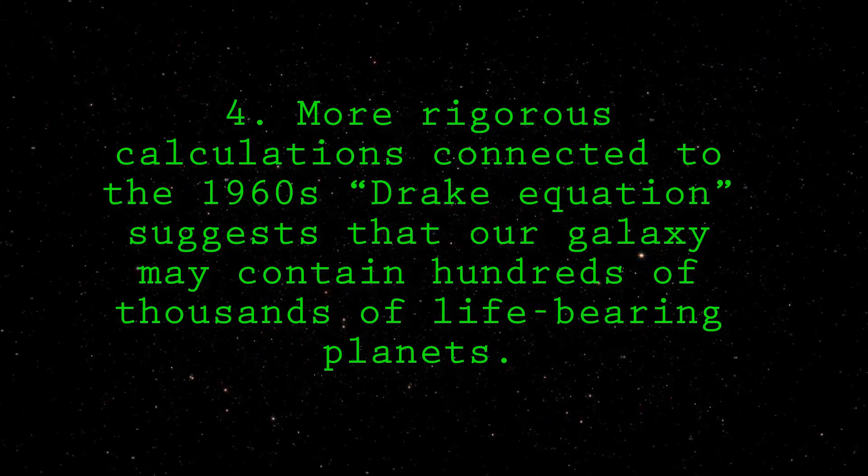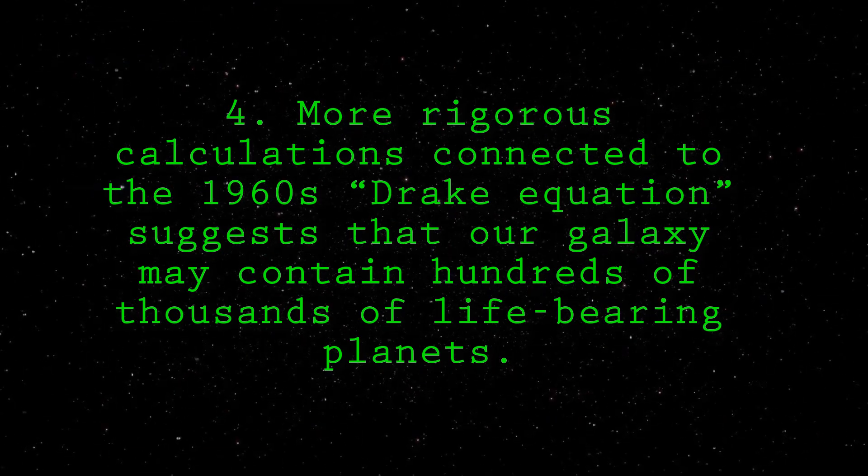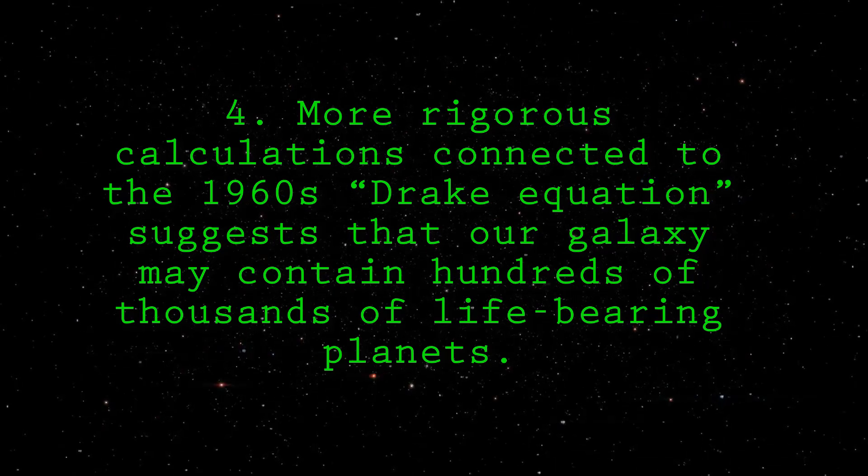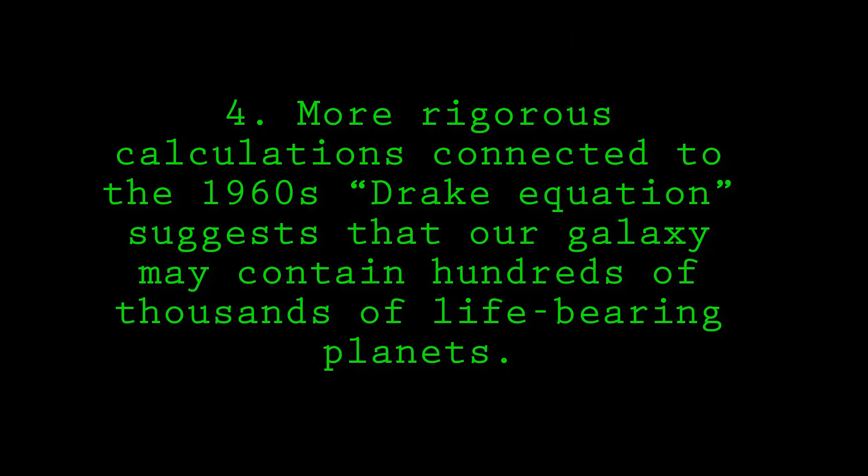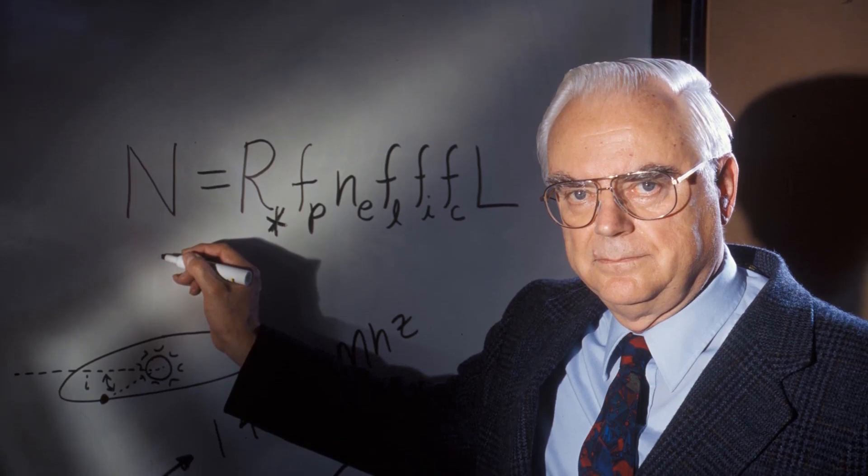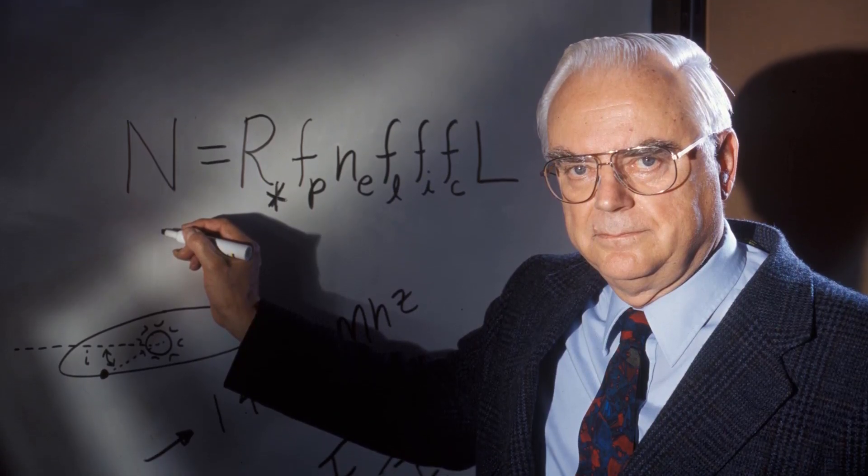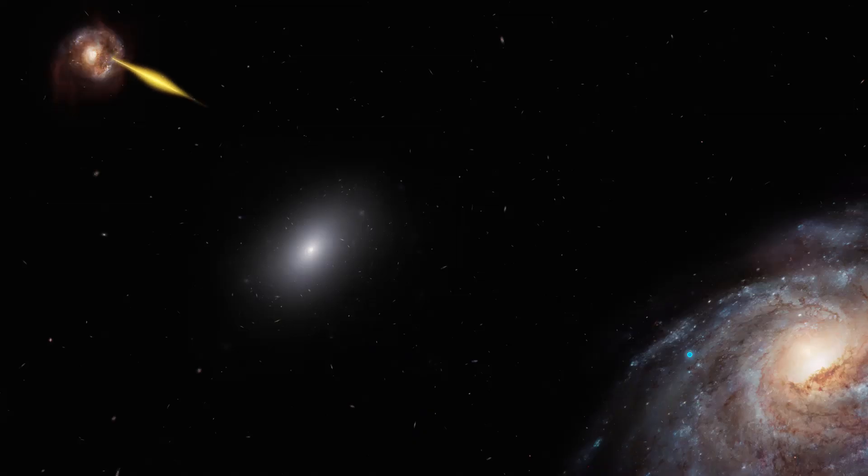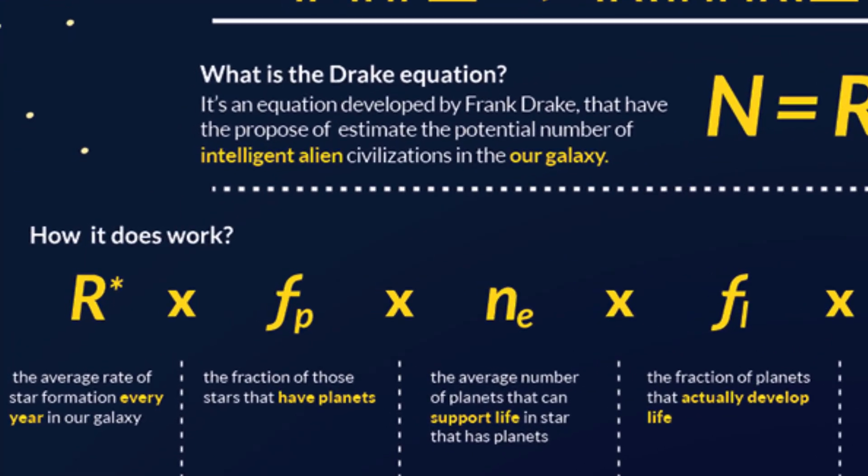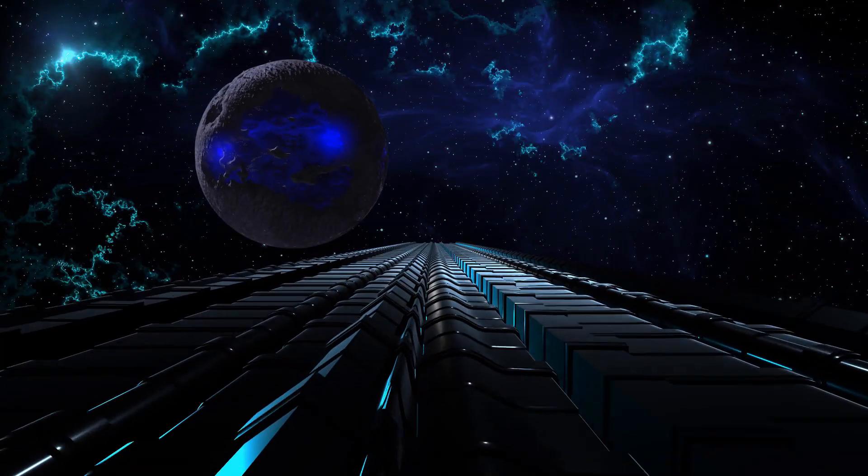Number 4. More rigorous calculations connected to the 1960s Drake equation suggests that our galaxy may contain hundreds of thousands of life-bearing planets. In 1961, US radio astronomer Frank Drake developed an equation to help estimate the number of planets hosting intelligent life and capable of communicating with us in the galaxy. The Drake equation multiplies together seven factors including the formation rate of stars like our Sun, the fraction of Earth-like planets, and the fraction of those on which life develops. Many of these figures are open to wide debate, but Drake himself estimates the final number of communicating civilizations in the galaxy to be about 10,000.